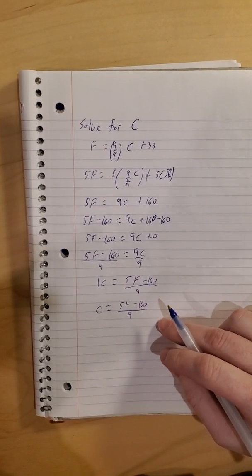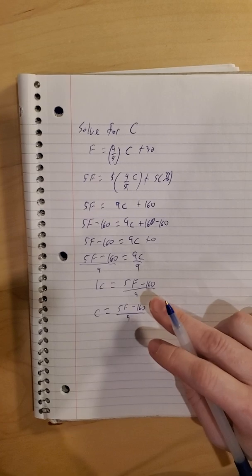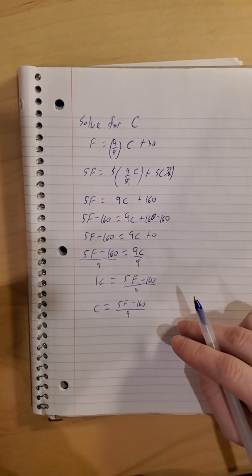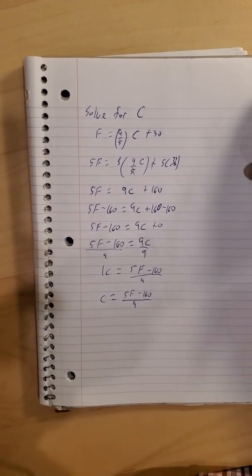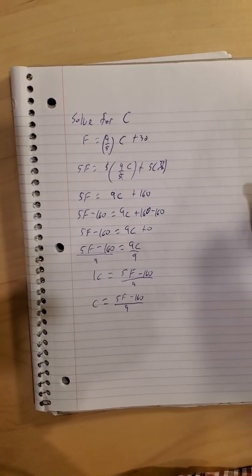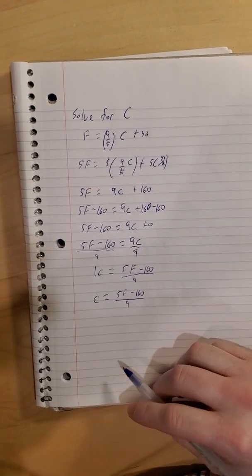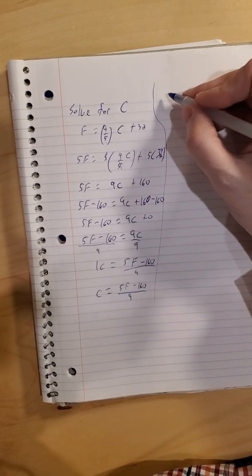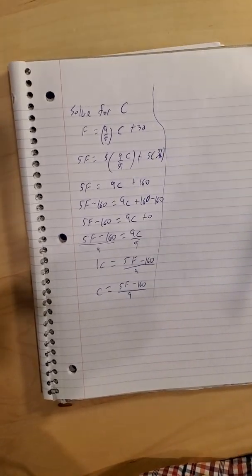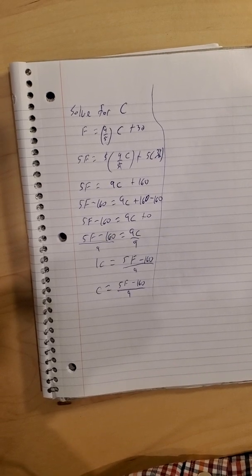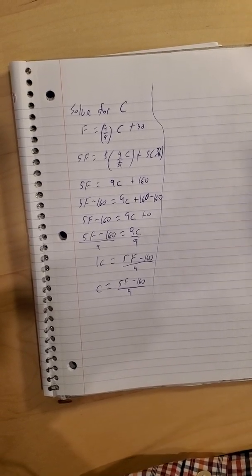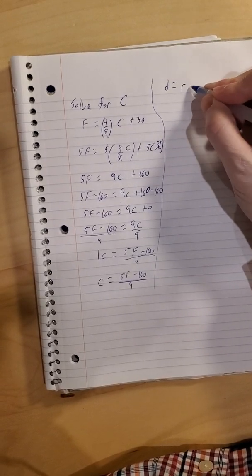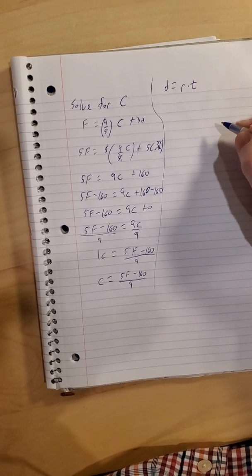So you can try out that same problem we did before, just plugging the 113 in here, and see which method you like better. All right, so then the last kind of problem that we have—we are looking at any kind of traveling problem: distance, rate, and time problems. If you walk at five miles an hour for two hours, you've gone 10 miles. Well, that relationship then was distance was the rate, how fast you were going, times the amount of time you were going that fast.